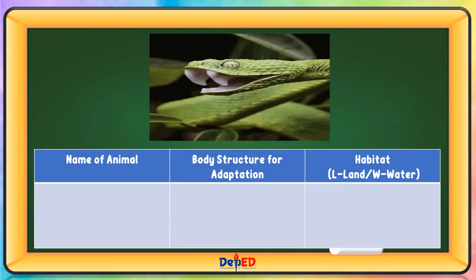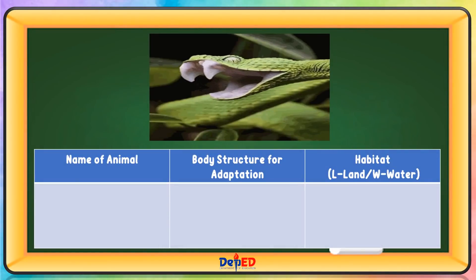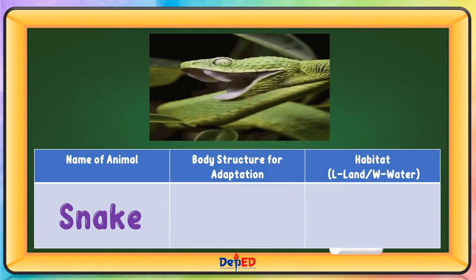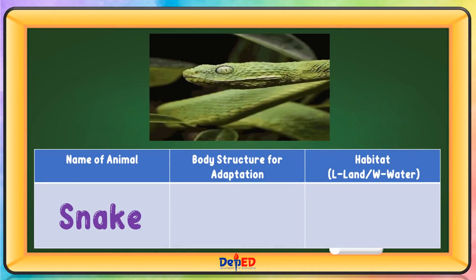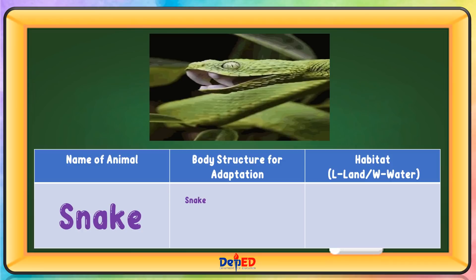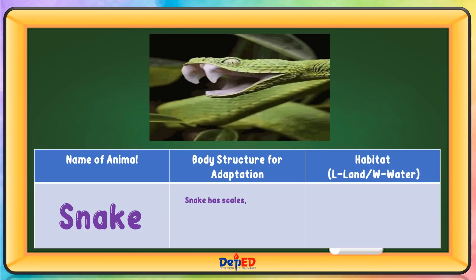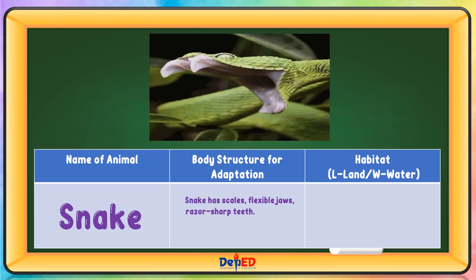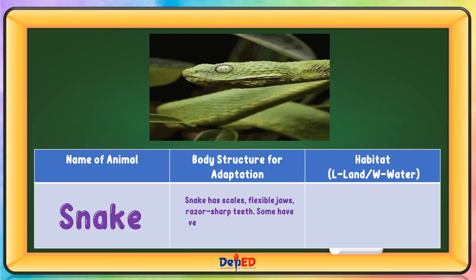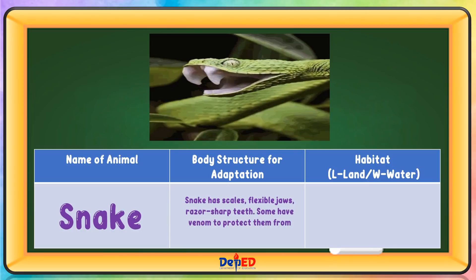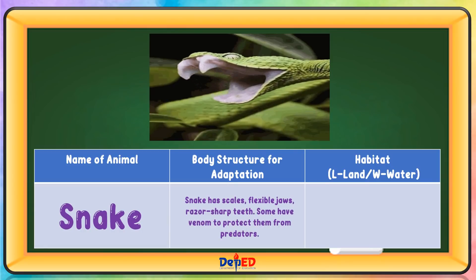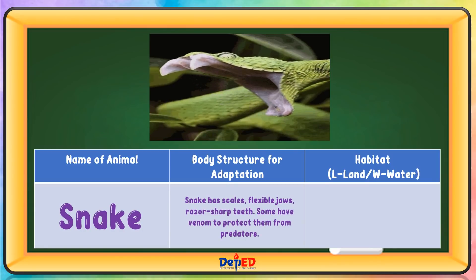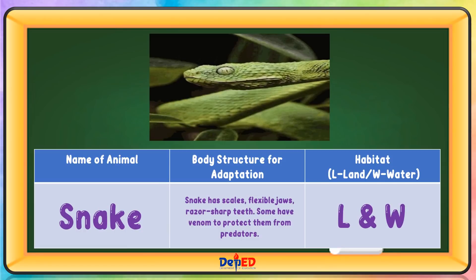Name of animal: Snake. Body structure for adaptation: Snake has scales, flexible jaws, and razor-sharp teeth. Some have venom to protect them from predators. Habitat: Land and water.